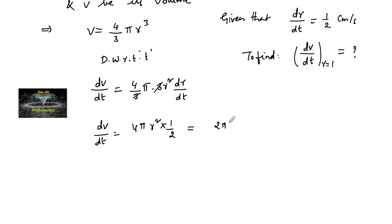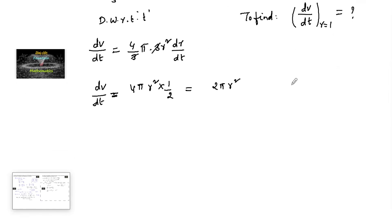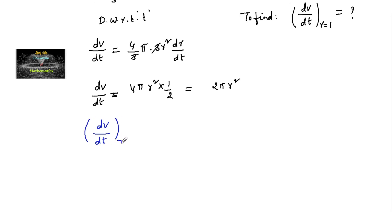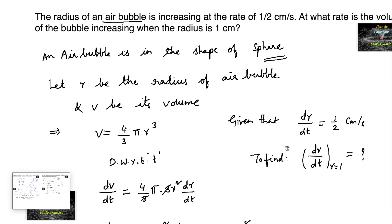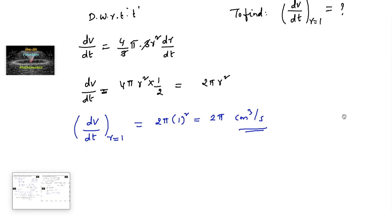We can write dv/dt = 2π r². At r = 1, dv/dt = 2π × 1² = 2π centimeter cube per second. So the rate of change of volume is increasing at the rate of 2π cm³ per second.